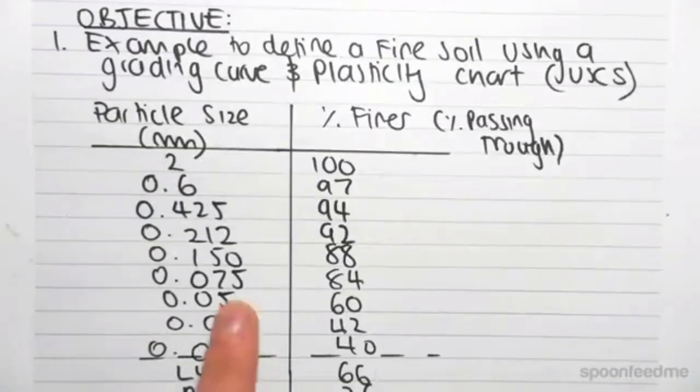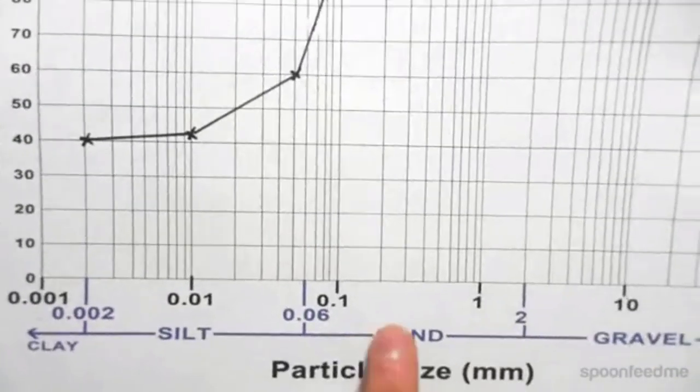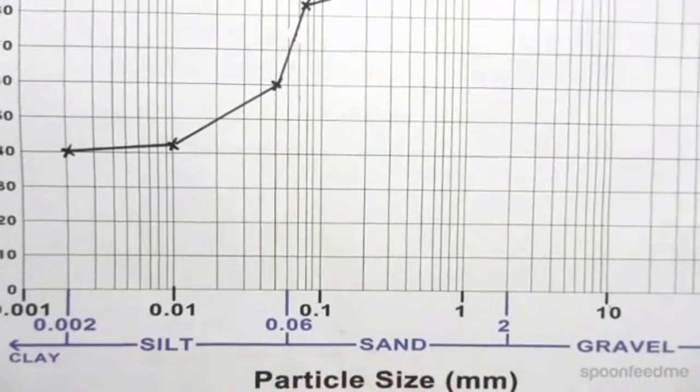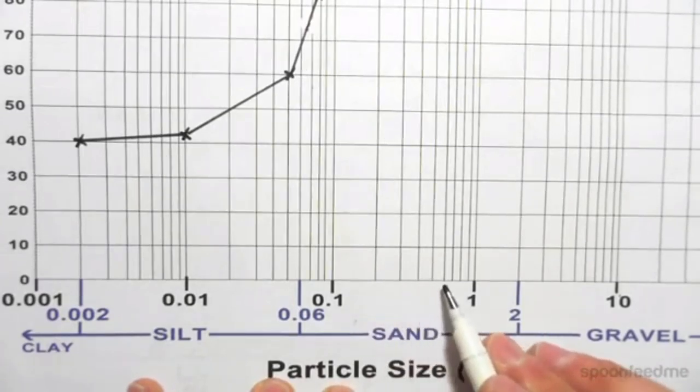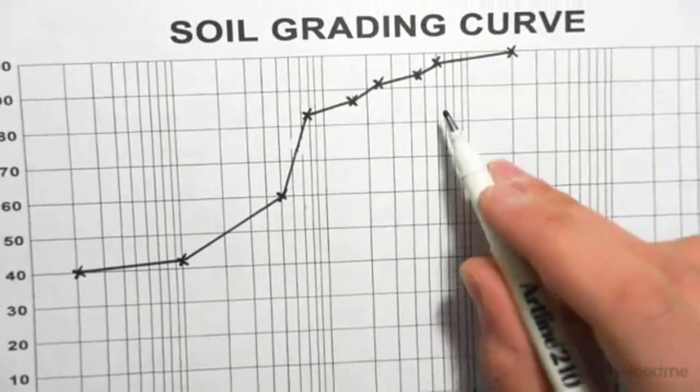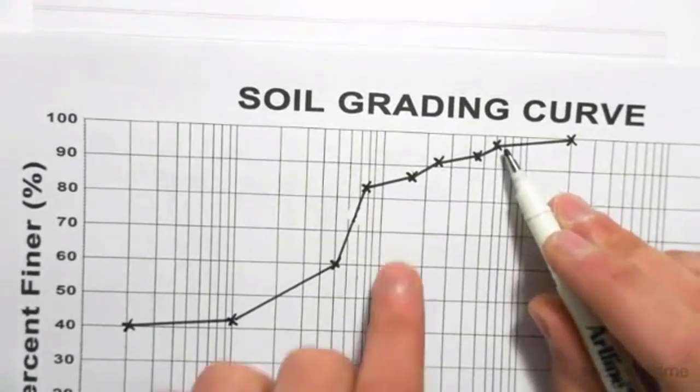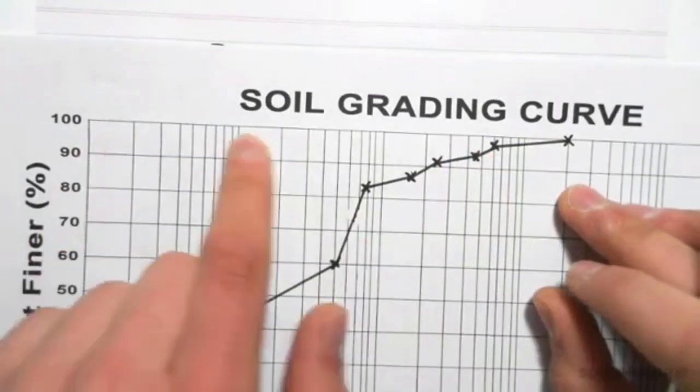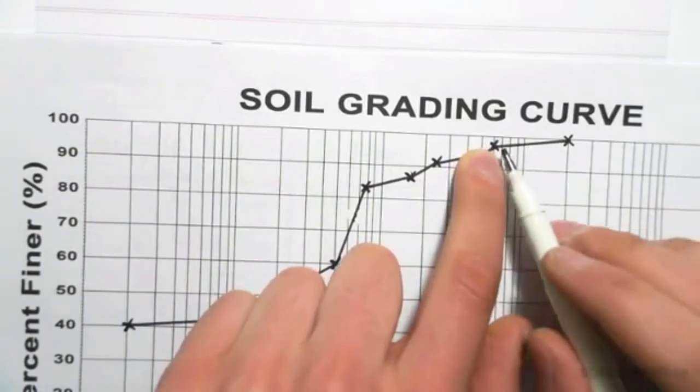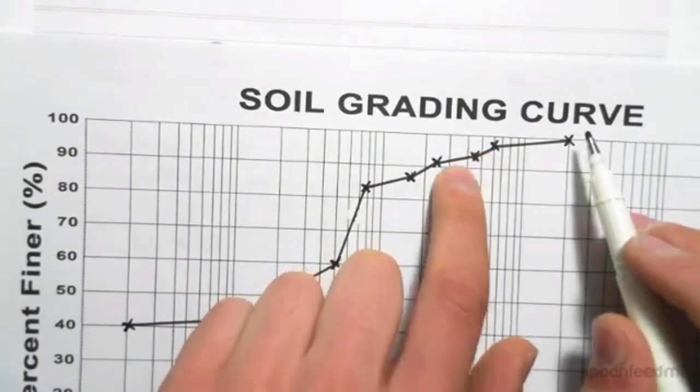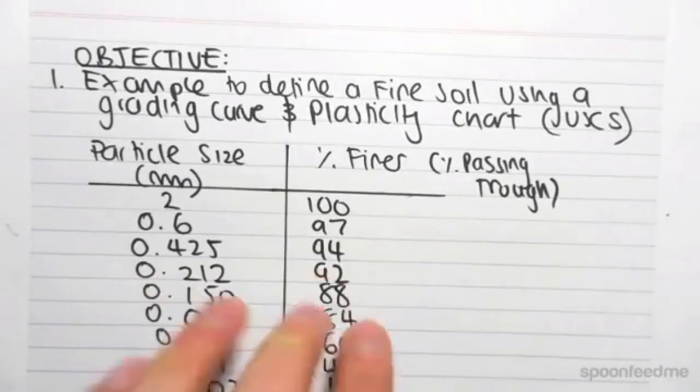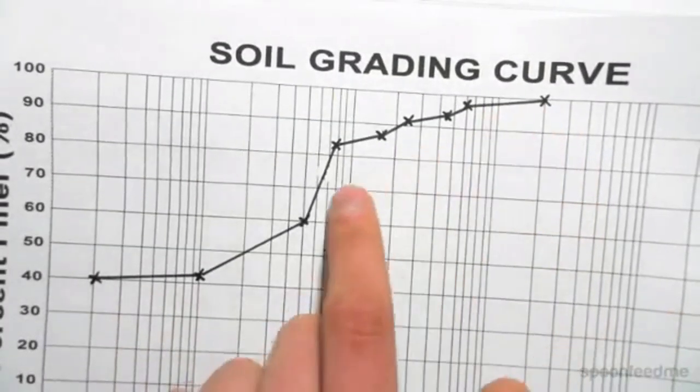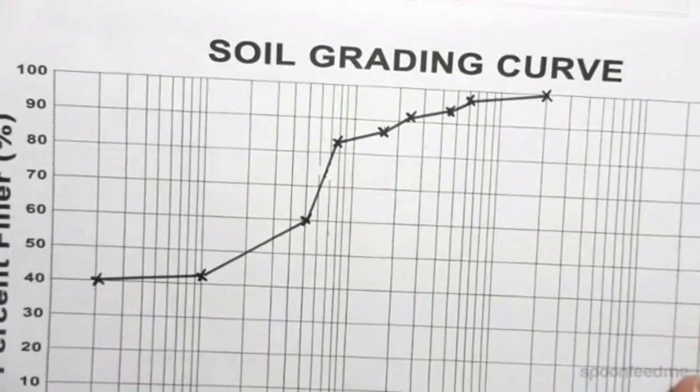The next point I had was 0.6 and 97%. So 0.6 is around there. I jutted up to up here, which is around 97%. And I drew a little cross, and I connected those points. And I did that for every single coordinate between particle size and percents finer, and I just joined all those dots to get this grading curve.